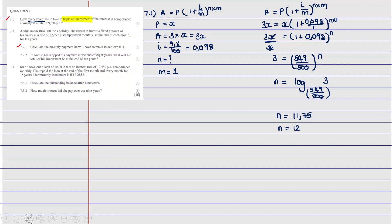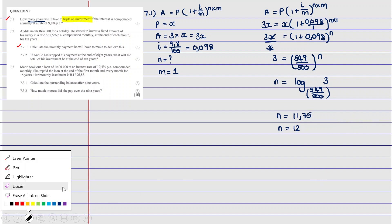Let me show what I mean by always rounding up. Let's say we got N equals 11.21 — even though rounding rules might give 11, because you always round up when looking for the number of years, N would also be 12 here. So that's how you would solve this question.